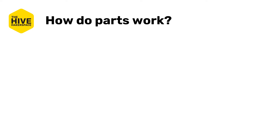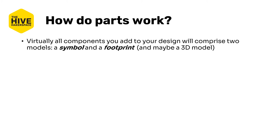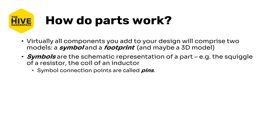Speaking about parts — similar to how there are two views for the entire PCB — each part or component included in your design, even the non-electrical ones, will have at least two models: a symbol for the schematic and a footprint for the layout. They may also have 3D CAD models as well for a 3D view or for exporting to mechanical design or simulation software.